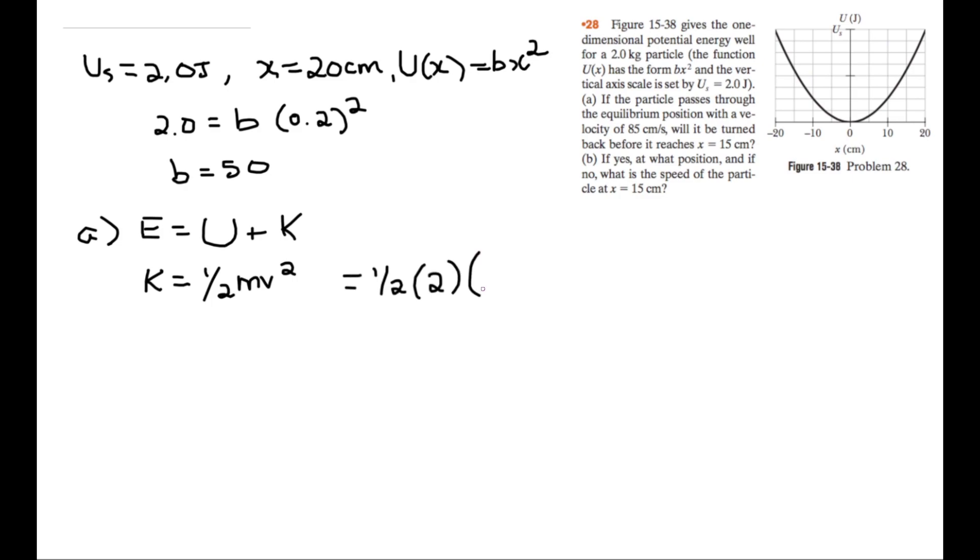times the velocity in meters, 0.85 squared. And this gives us 0.7225 joules. This is the kinetic energy at equilibrium position.